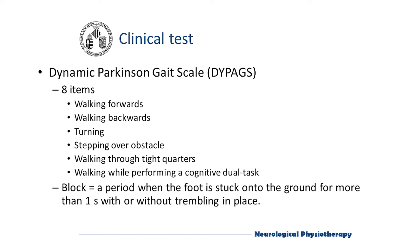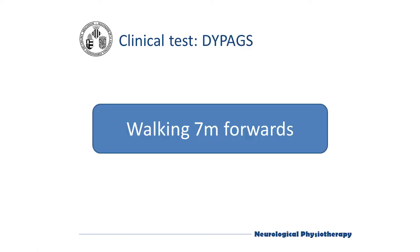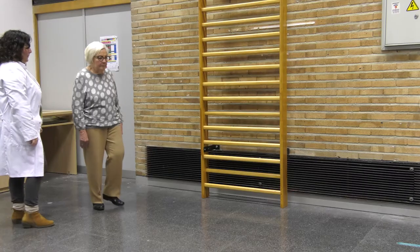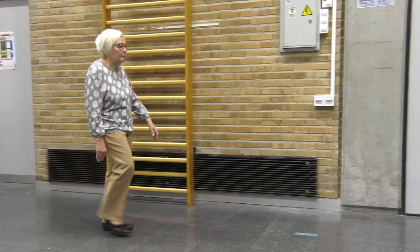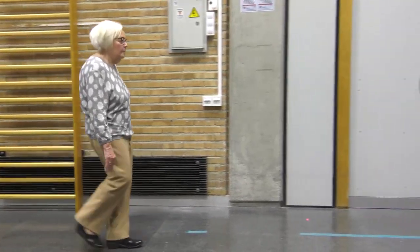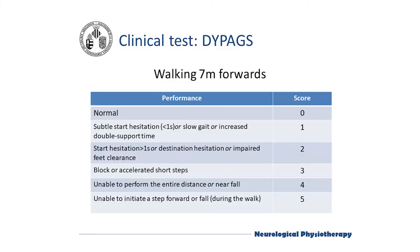Walking seven meters forwards in a seven-meter-long corridor, the patient is asked to walk forward spontaneously. We score from zero to five depending on whether the patient walks fluently, hesitates at the beginning, suffers blockages, is unable to perform the distance, or is unable to start the test.